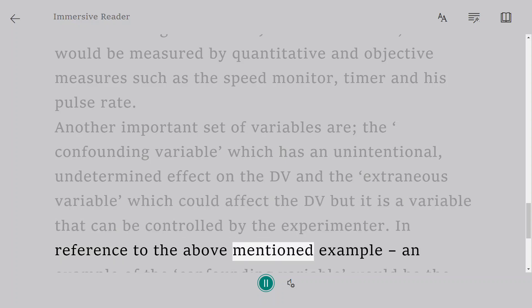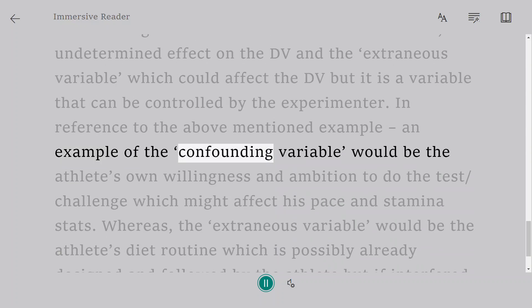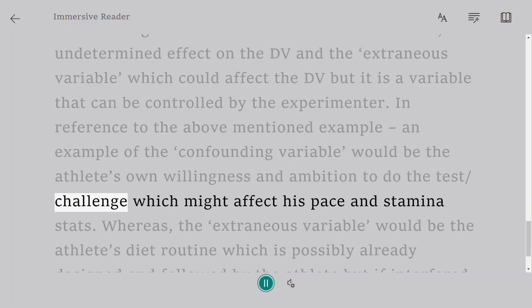In reference to the above mentioned example, an example of the confounding variable would be the athlete's own willingness and ambition to do the test or challenge, which might affect his pace and stamina stats.